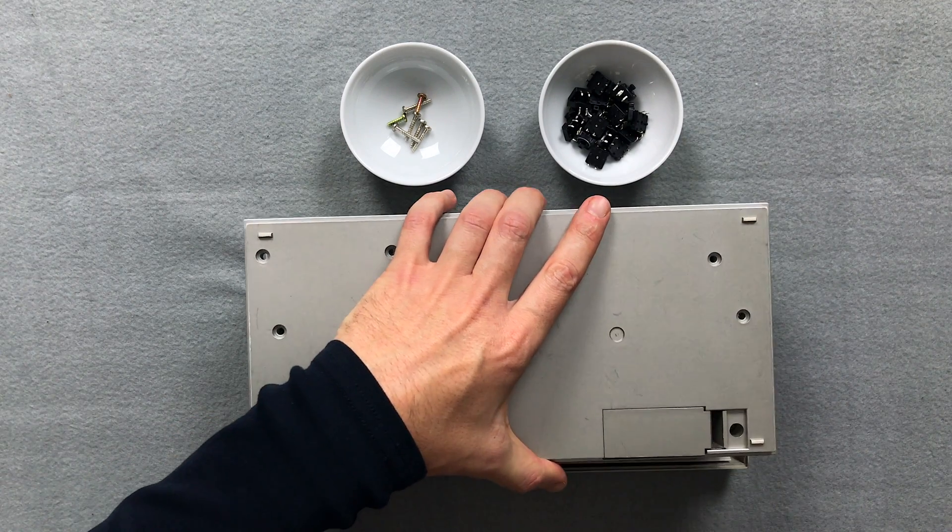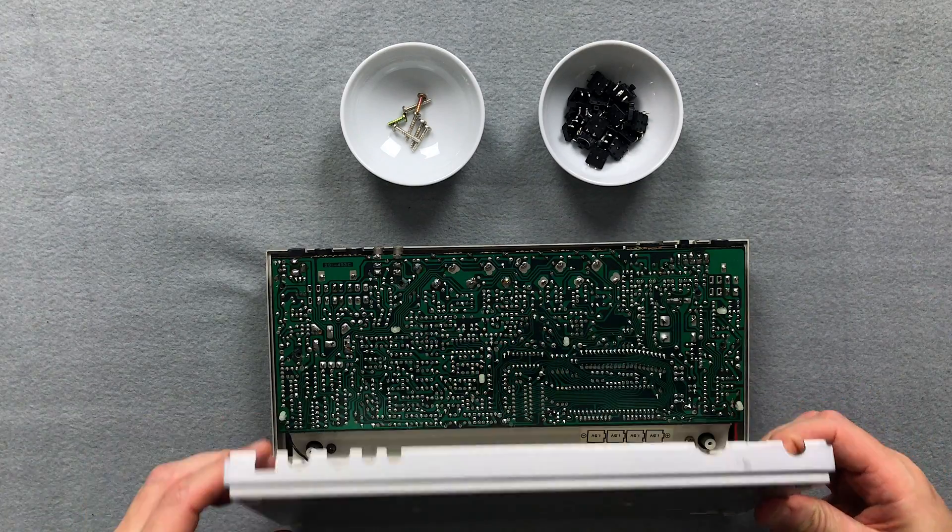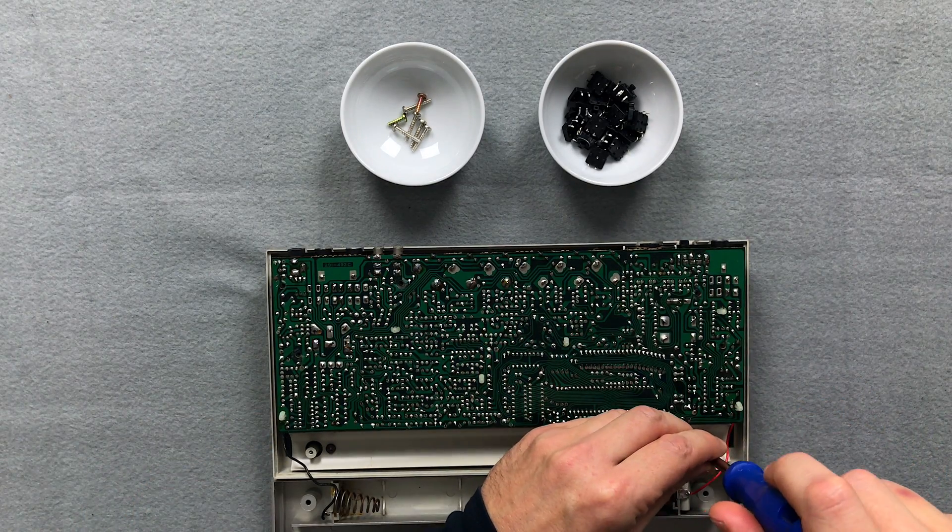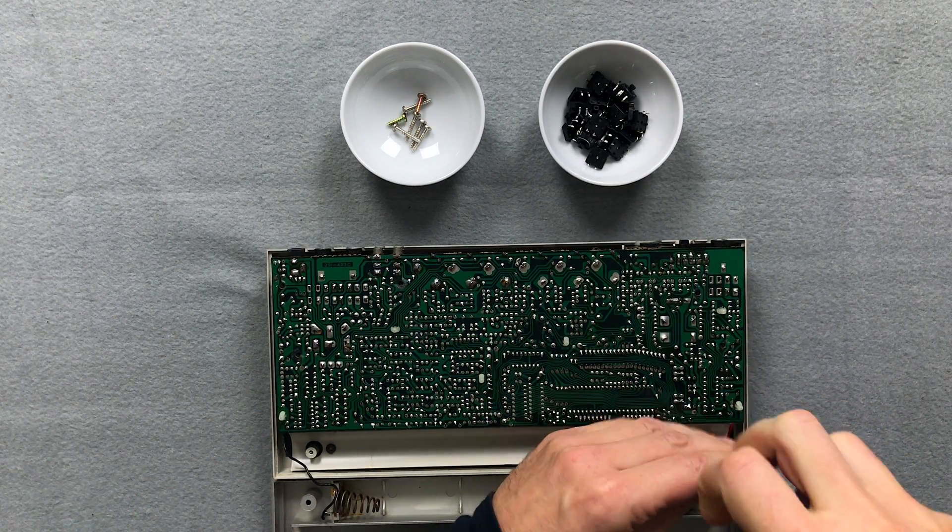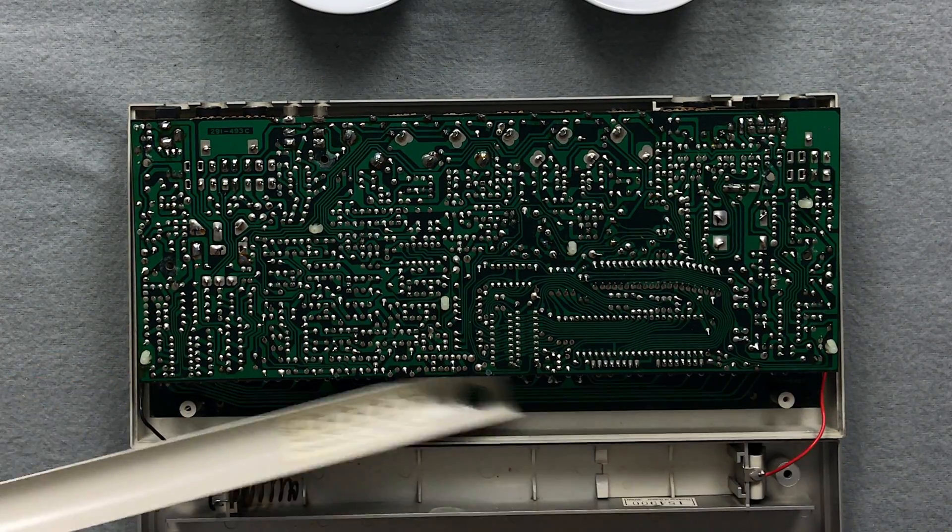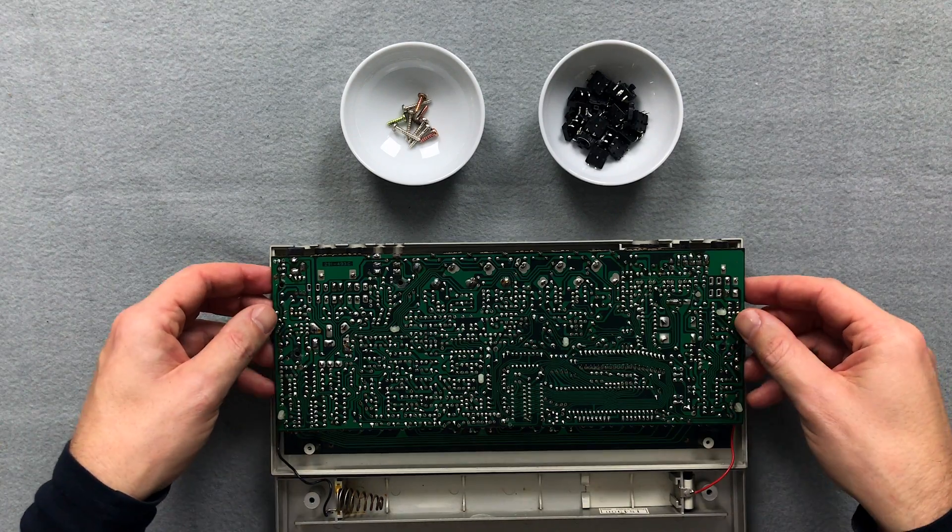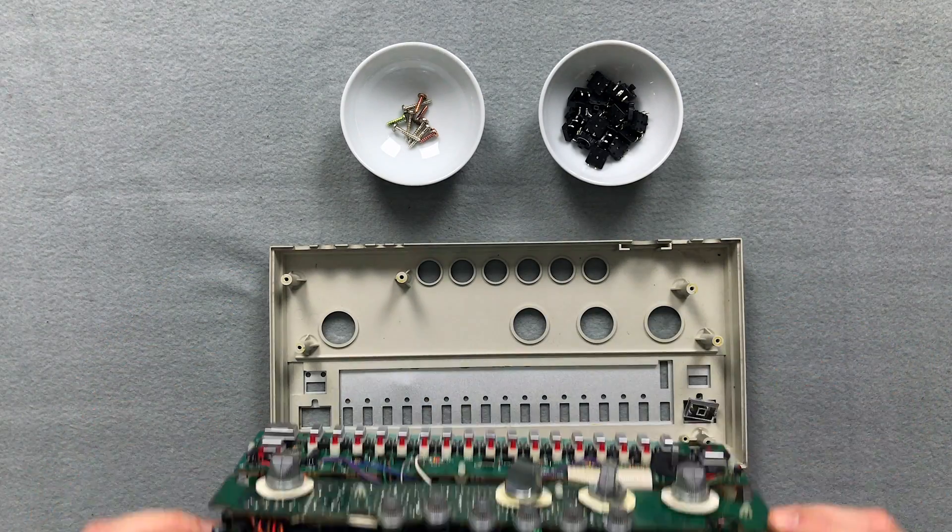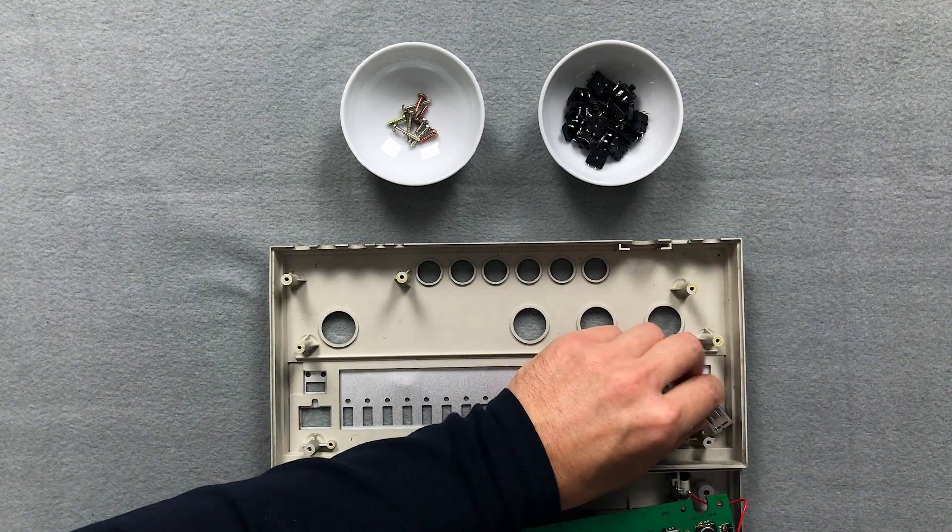Remove the upper half and unscrew the battery holder. Now place the circuit boards in the other half of the housing and turn everything, so that you can easily reach the buttons.